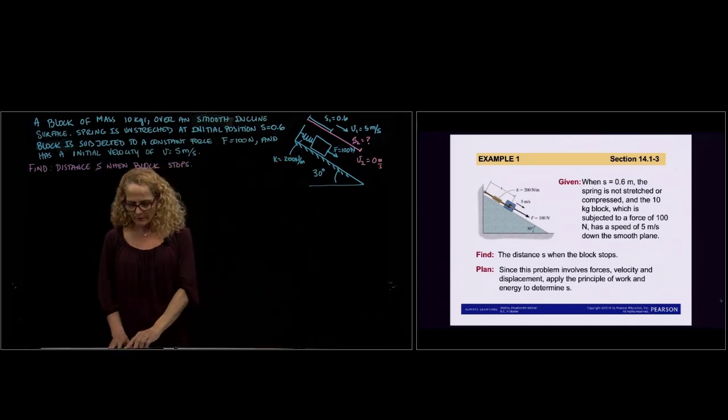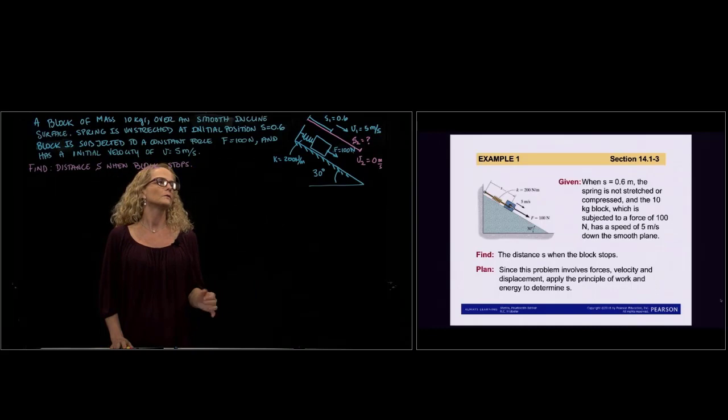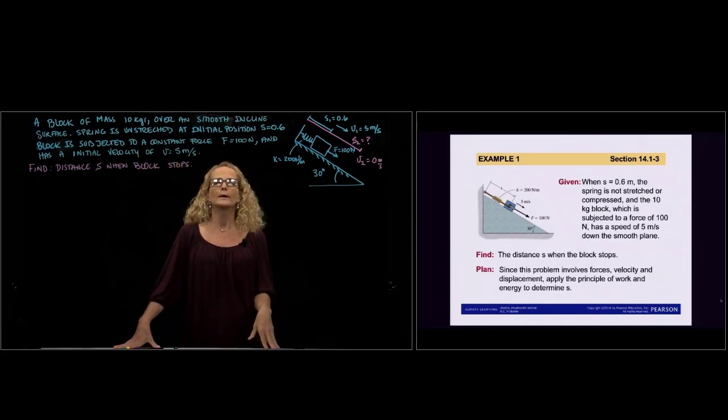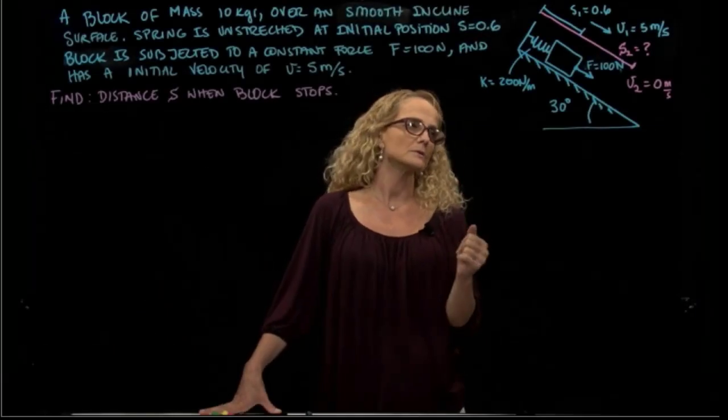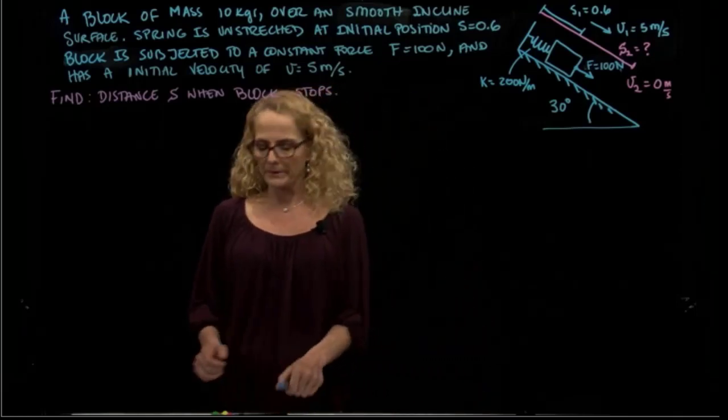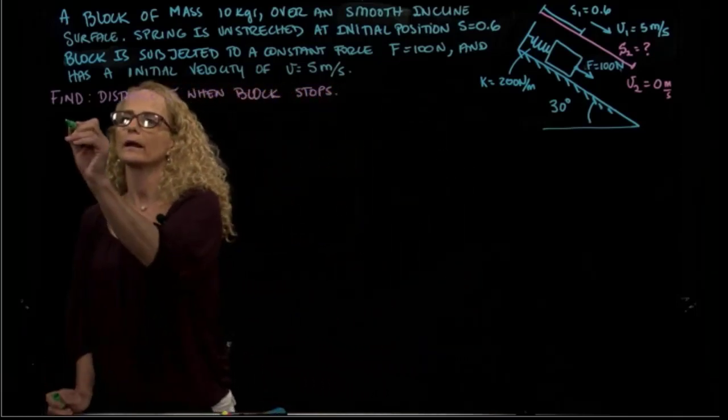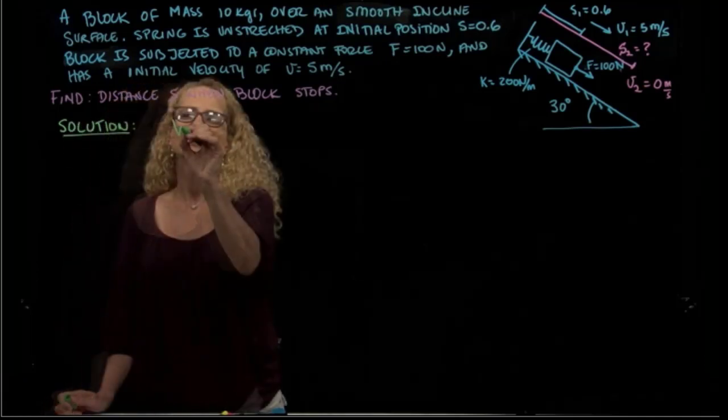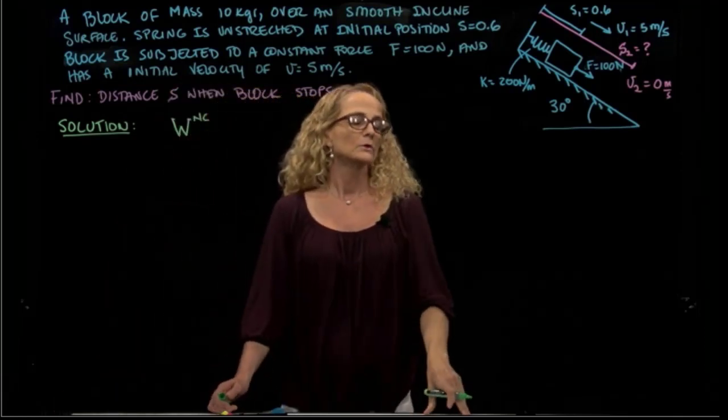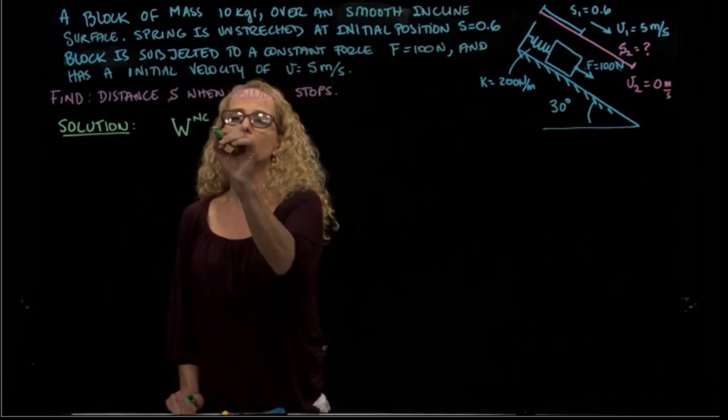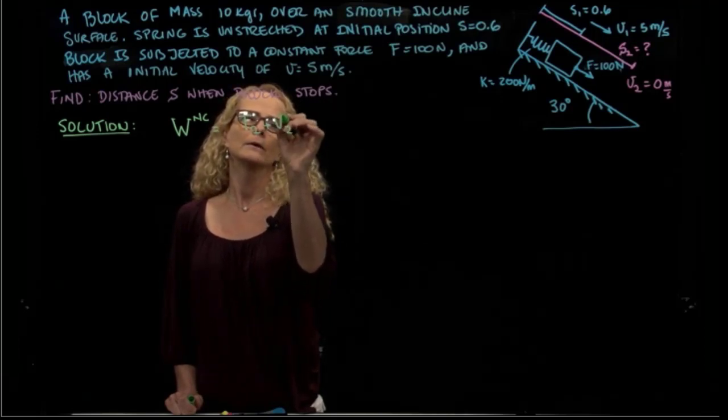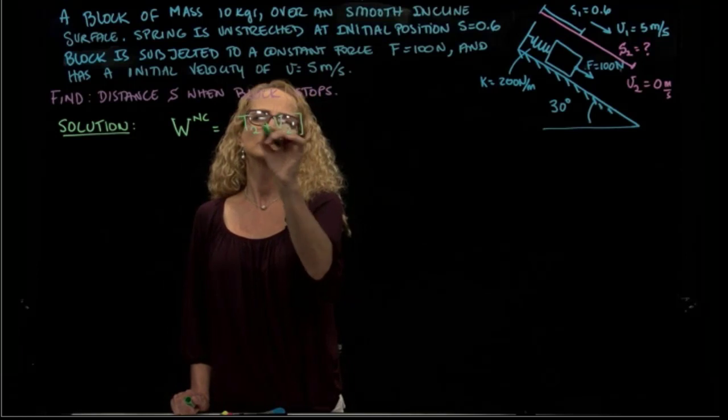So what do we do? We have a problem that involves forces, distance, and velocity. So we will apply the principle of work and energy. There are many ways, as you know, how to write the principle of work and energy. The way that I like to write it is that the work done by non-conservative forces equals the total energy in the second position, or final position, minus the total energy in the first position.